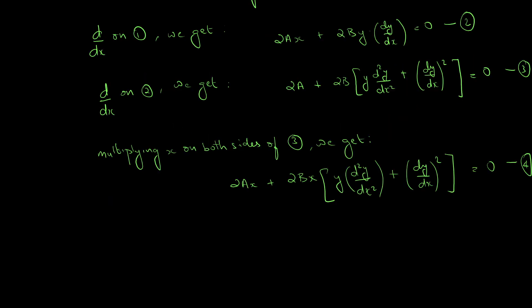Now, we can eliminate 2Ax from using equations 2 and 4. So, we just do 2 minus 4. We get 2Ax minus 2Ax. This first term gets cancelled.